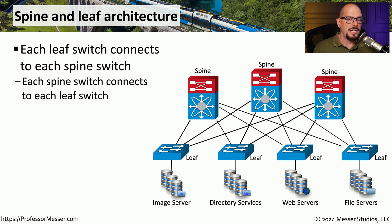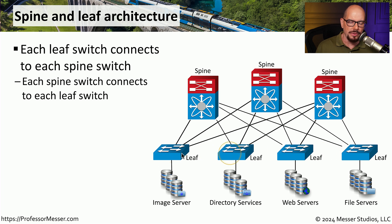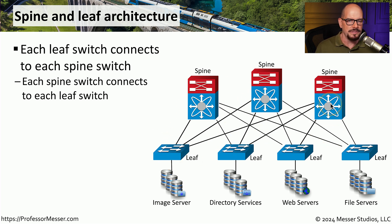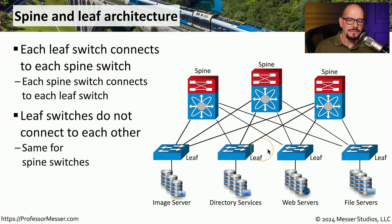Many data centers take advantage of a spine and leaf architecture. This is where you would have individual switches at the top that are the spine of the network, and switches in the middle that are the leaf switches. Different devices connect to the leaf. The spine network is connected to all of the leafs, and the leafs are connected to each of the spines. However, those leaf switches do not connect directly to each other, and the spine switches also do not connect directly to each other.